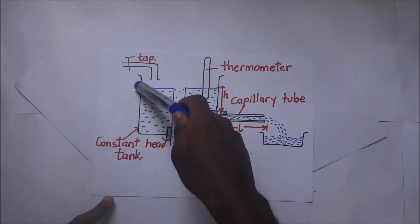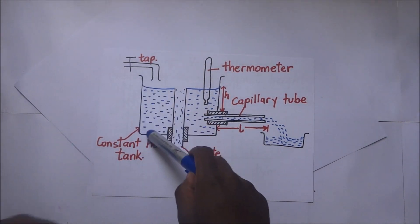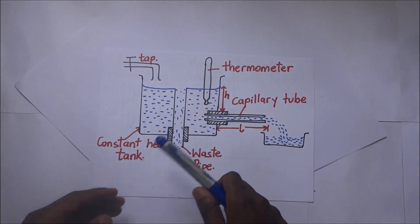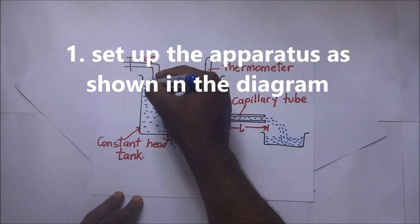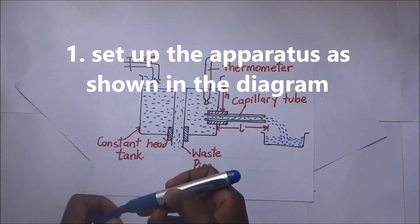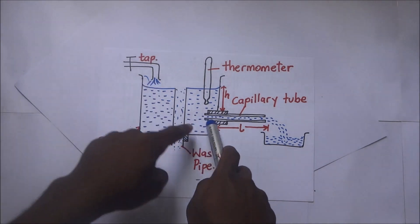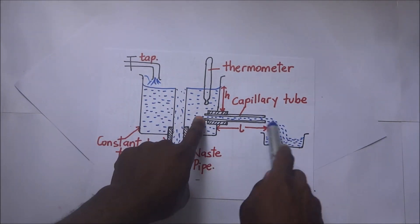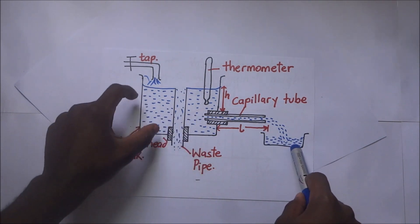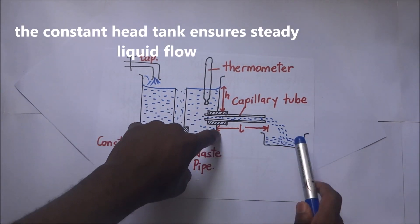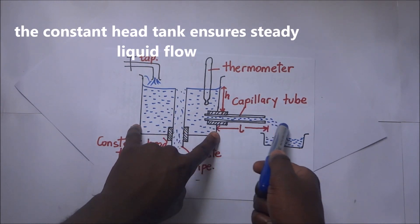Looking at our apparatus, this here is a constant head tank. The purpose of the constant head tank is to ensure there is a steady flow of liquid. Water comes in, and only the water that comes through the tank is let into this beaker or container. The constant head tank ensures steady flow through the capillary tube.